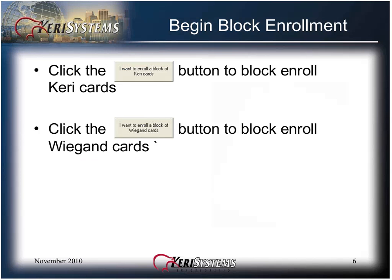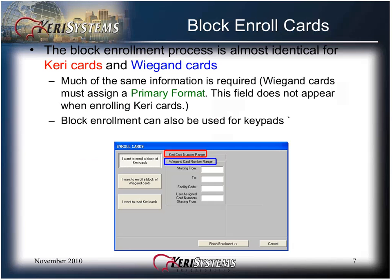If you have both types of credentials in your system, you must block enroll them in separate operations. The Block Enrollment process is almost identical for carry cards and Wiegand cards, and much of the same information is required. Wiegand cards must assign a primary format — this field does not appear when enrolling carry cards. Block Enrollment can also be used for keypads. If you are block enrolling PIN numbers, they are treated like 26-bit Wiegand card numbers. Cary Systems recommends that the PIN number facility code be set to zero.